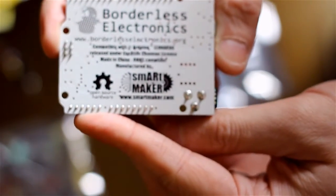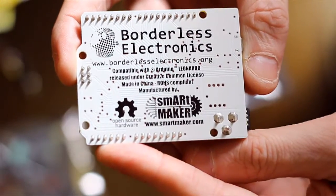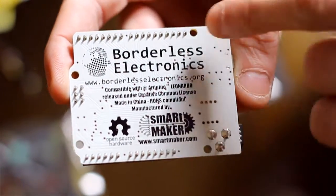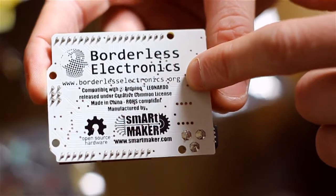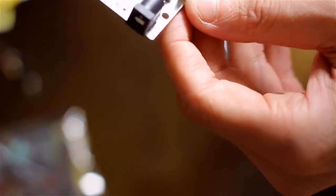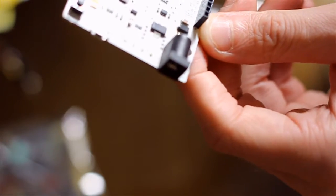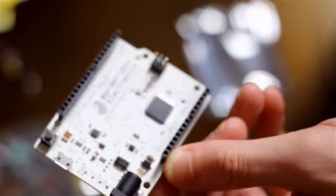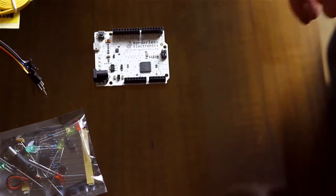So on the back you can see it's got sort of details of board receptions. It's just a standard Leonardo, really. Leonardo clone. Which means it can do everything that a Leonardo can. So we've got the board.